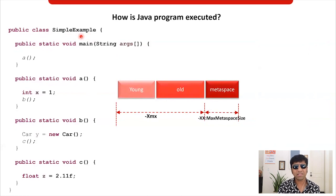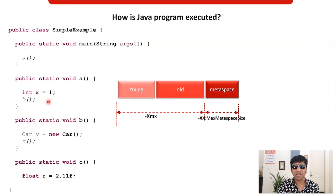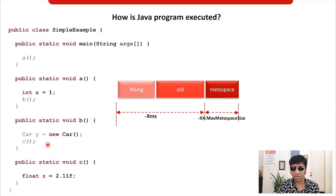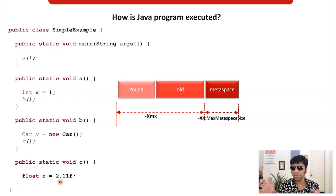Let's see what this program does. There is a simple example class. It has a main method, which is the entry point to all Java applications, and it has a method A. The main method invokes method A. The main method initializes a primitive data type — integer x equals 1. From there, it goes on to execute method B, which instantiates a complex data type — a car object. Then it goes on to invoke method C, which initializes a primitive data type float z equals 2.11. Let's see how JVM executes this program and where all the objects get placed.